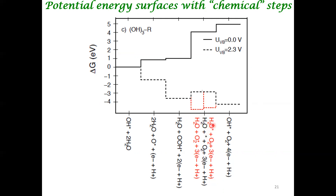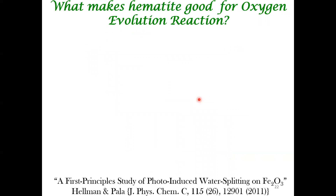For instance, H₂O is bound to an active site, and you can ask: what is the desorption energy of H₂O from that binding site? That is just a chemical step with no electron or photon transfer. Similarly, you can ask about the energy required for O₂ desorption from an active site. These chemical steps can also be included to compute a more complete potential energy surface.